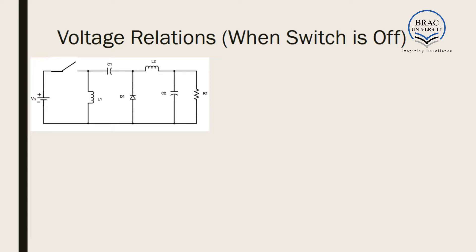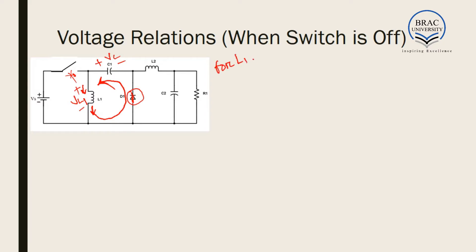When the switch is off for L1 — when the switch was on, L1 was being charged in this direction. When the switch gets off, since no current can flow through the switch any longer, L1 will get discharged in this direction. The path of discharge follows through the forward-biased diode. Considering KVL: plus VL1 minus Vc is equal to 0, so VL1 is equal to Vc. We put this as equation number 2.